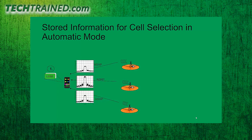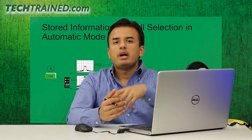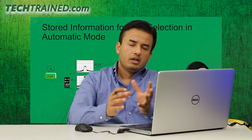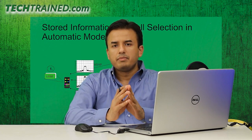When you power on your phone, it will read other PLMNs too, but will select the one which belongs to the home PLMN. If there is no home PLMN available and your operator has roaming agreements with other operators, your phone will select an equivalent home PLMN. Additionally, if you as a user want to select a certain PLMN yourself, that is called manual PLMN selection.